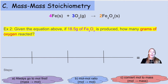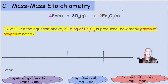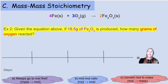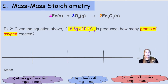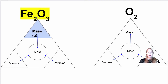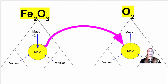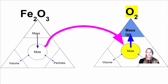Let's try one more problem. Given the equation above, if 18.5 grams of Fe₂O₃ is produced, how many grams of oxygen reacted? We know how much Fe₂O₃ was produced and want to calculate how much oxygen was used — it's hard to measure oxygen in the air directly, but we can calculate it mathematically using stoichiometry. Our plan: convert grams of Fe₂O₃ to moles, use the mole-to-mole ratio to get moles of oxygen, then convert to grams of oxygen.